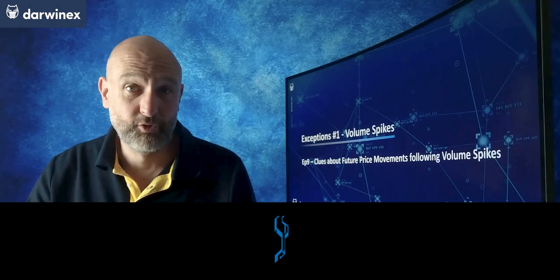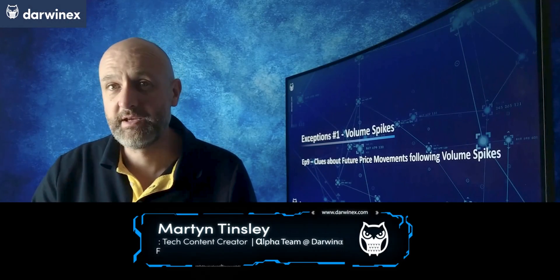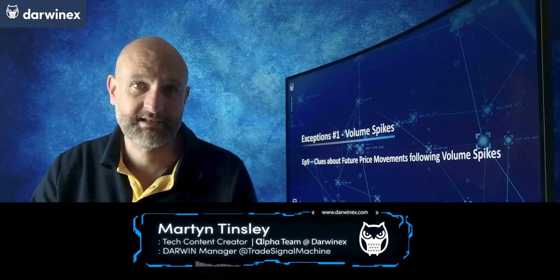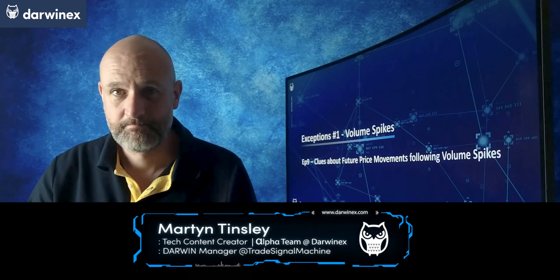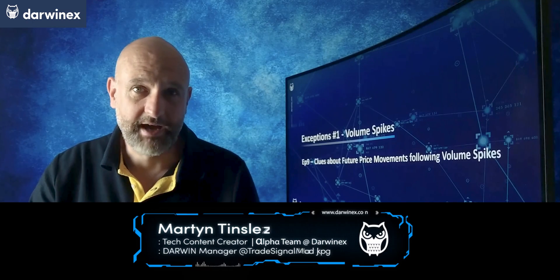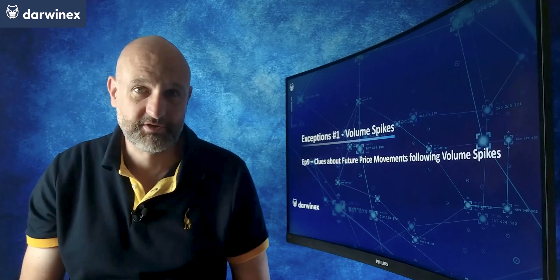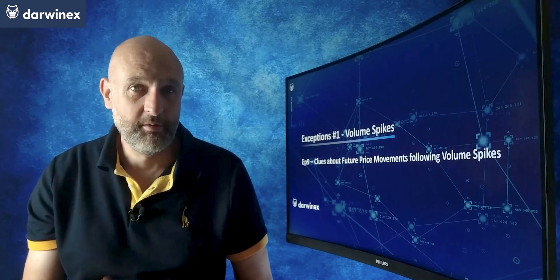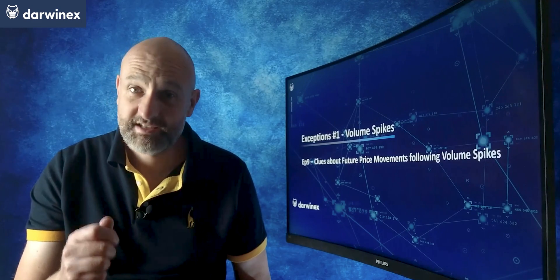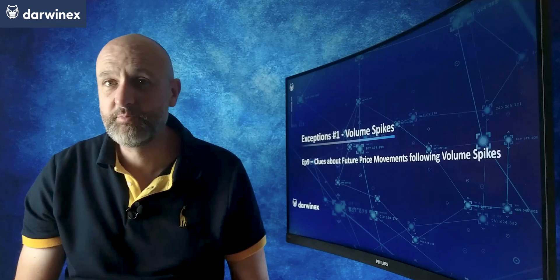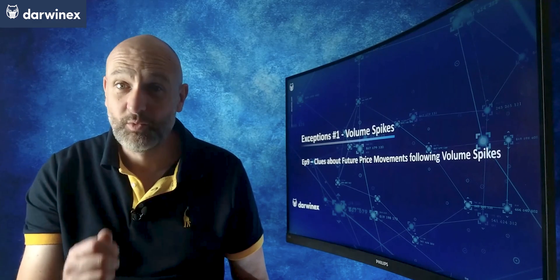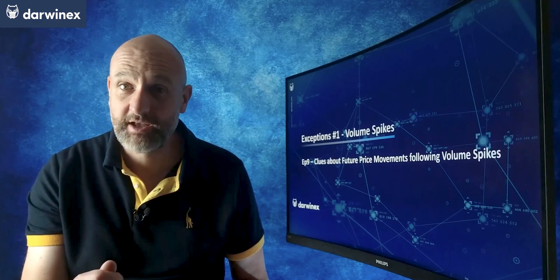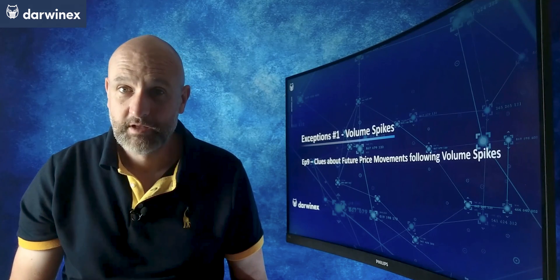Although there are of course more, in this series I'll be covering three of the main exceptions to the interpretation of volume data. In today's episode I'm going to take a look at the first of those, and this is the phenomenon known as volume spikes. Understand the exceptions to the generally agreed principles of price action and volume data, and this will differentiate you from other traders.